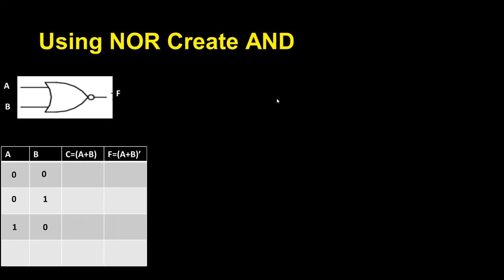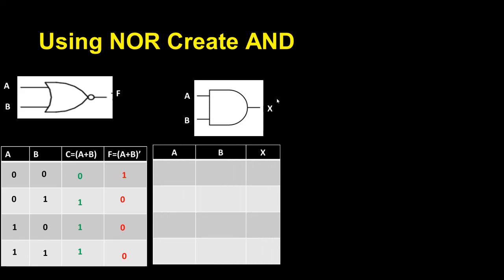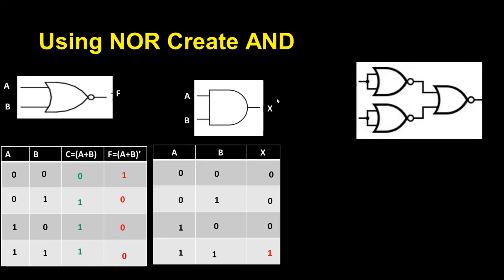I write the possible input combinations, then A plus B, and the final output: A plus B entire bar. This is my AND gate — as you know, in an AND gate you have two inputs and X as output. I create the truth table for the AND gate with all possible inputs.